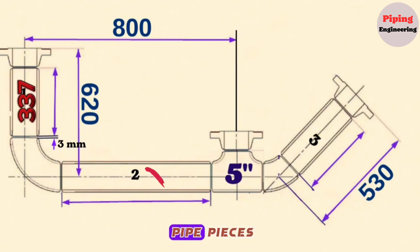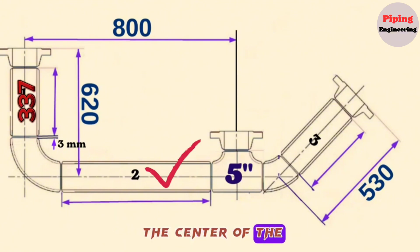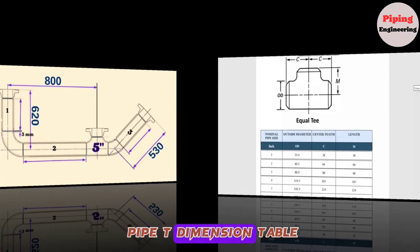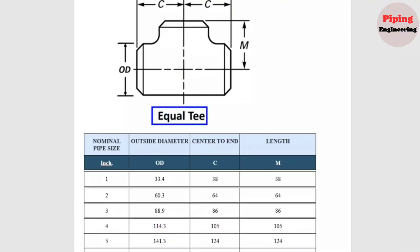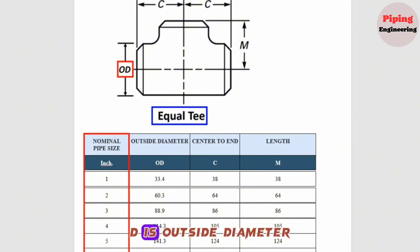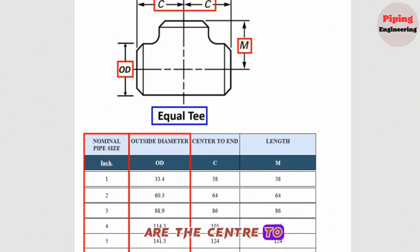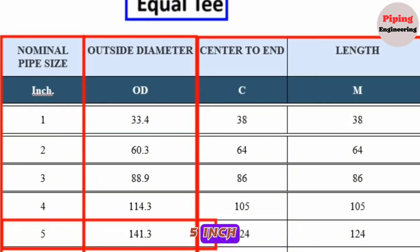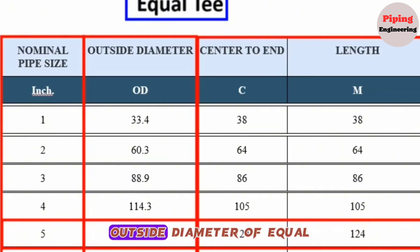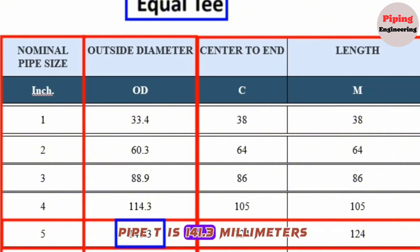Now let's calculate the length of the 5-inch pipe piece Item 2. In this section of the pipeline, the total distance from the center of the 90-degree butt weld elbow to the center of the equal pipe tee is 800 mm. Let's look at the pipe tee dimension table. The NPS column is the nominal pipe size, D is the outside diameter, and C and M are the center-to-end dimensions. For 5 inch: outside diameter is 141.3 mm, and center-to-end is 124 mm.